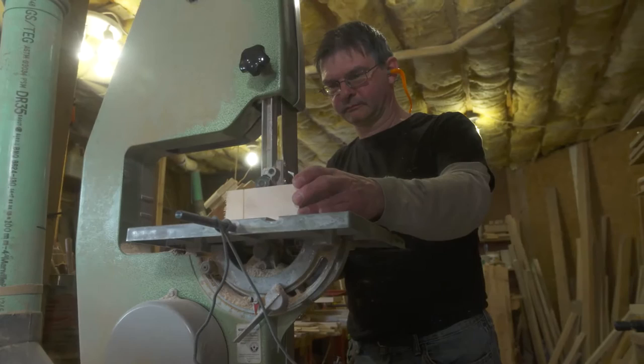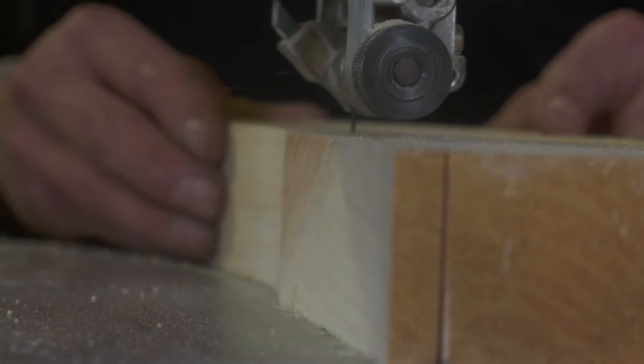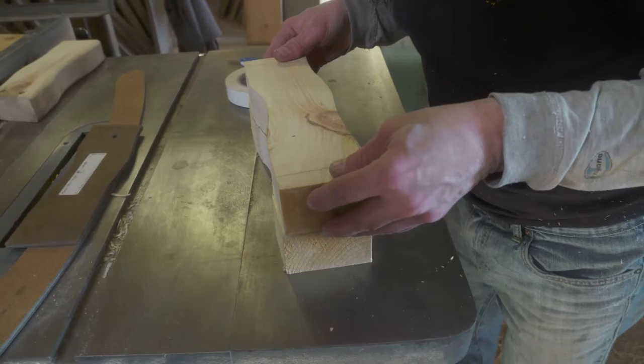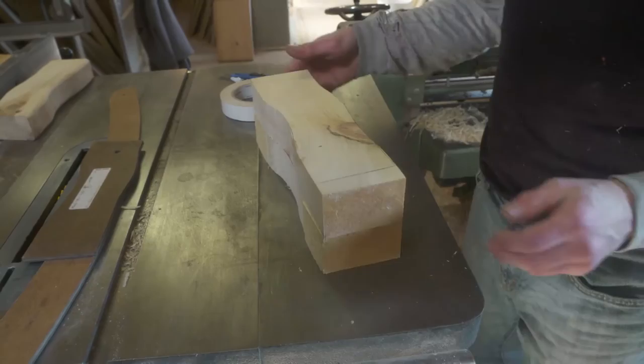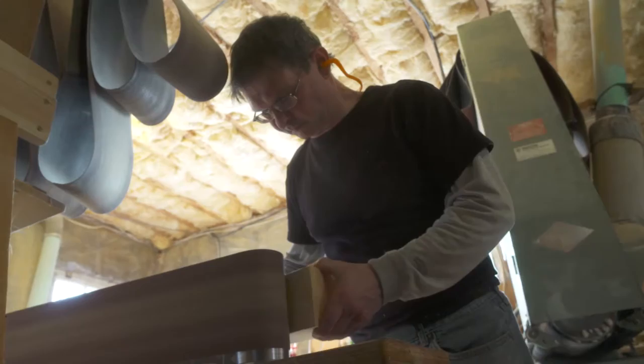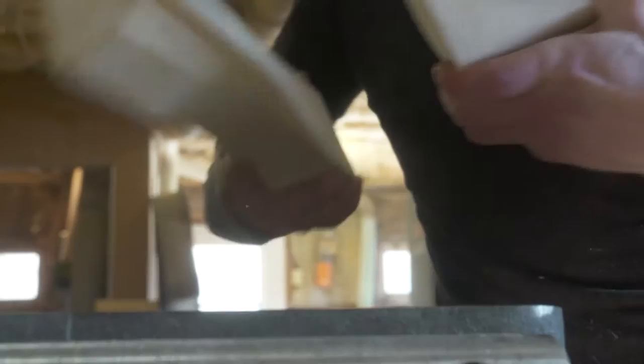The legs and rockers are carefully cut out on the bandsaw. The legs are temporarily stuck together with double-sided tape to ensure symmetry in this next step. Sanding the legs with 50 grit sandpaper, the cut edges are smoothed in perfect symmetry. The smooth pieces are then separated again.